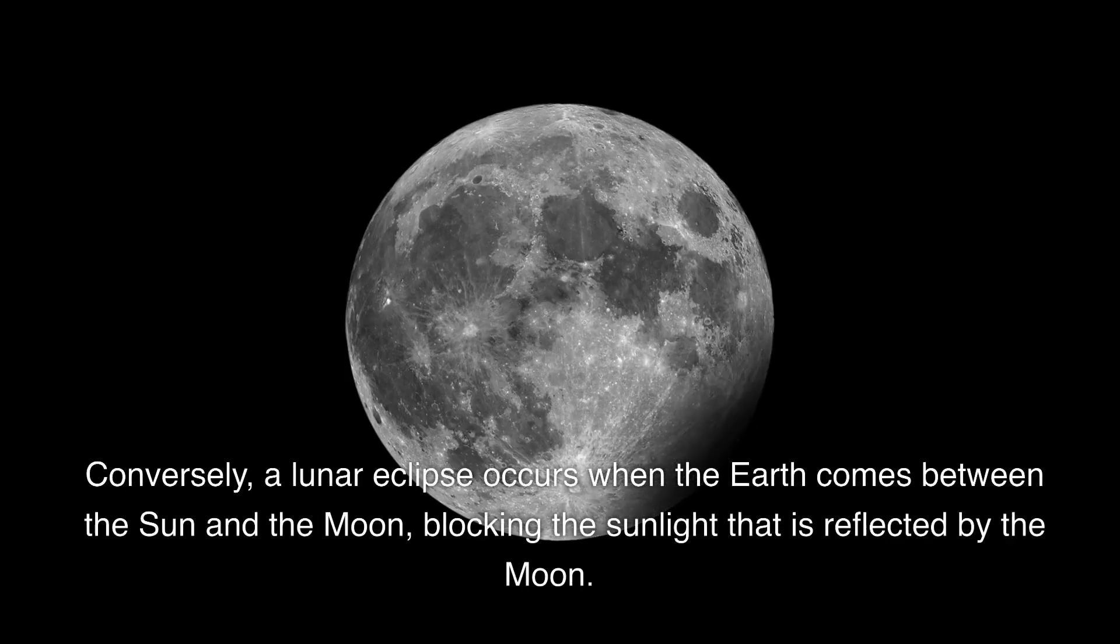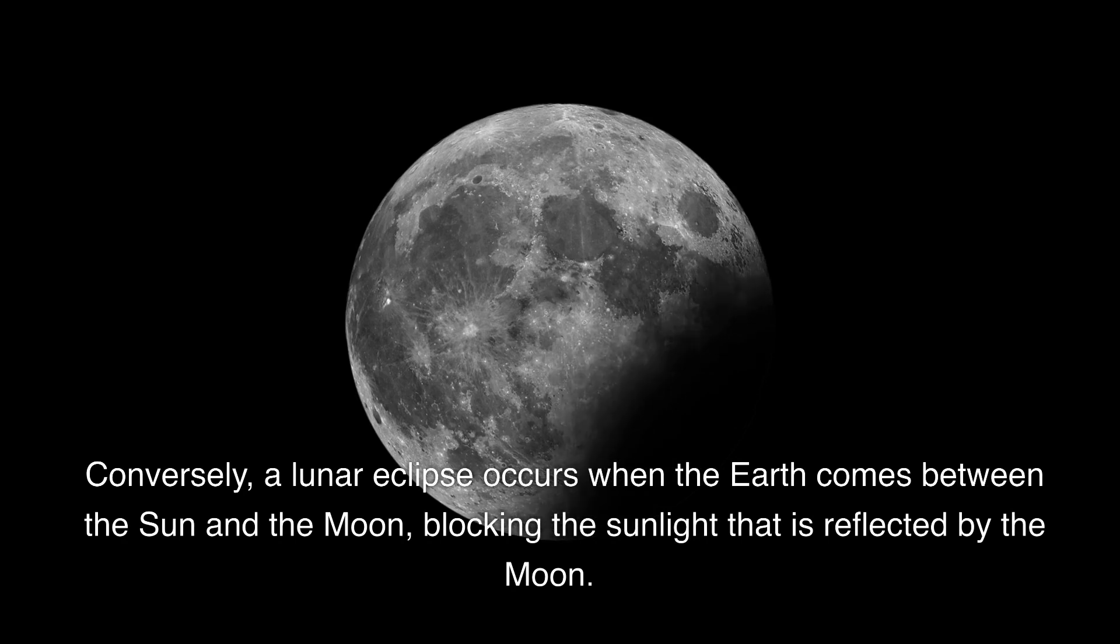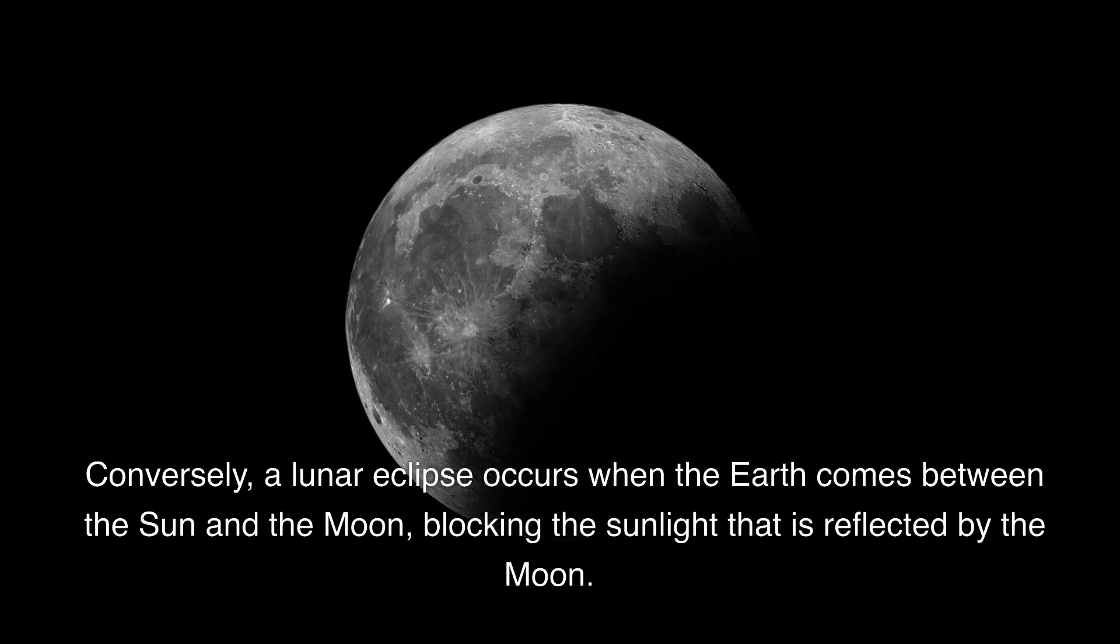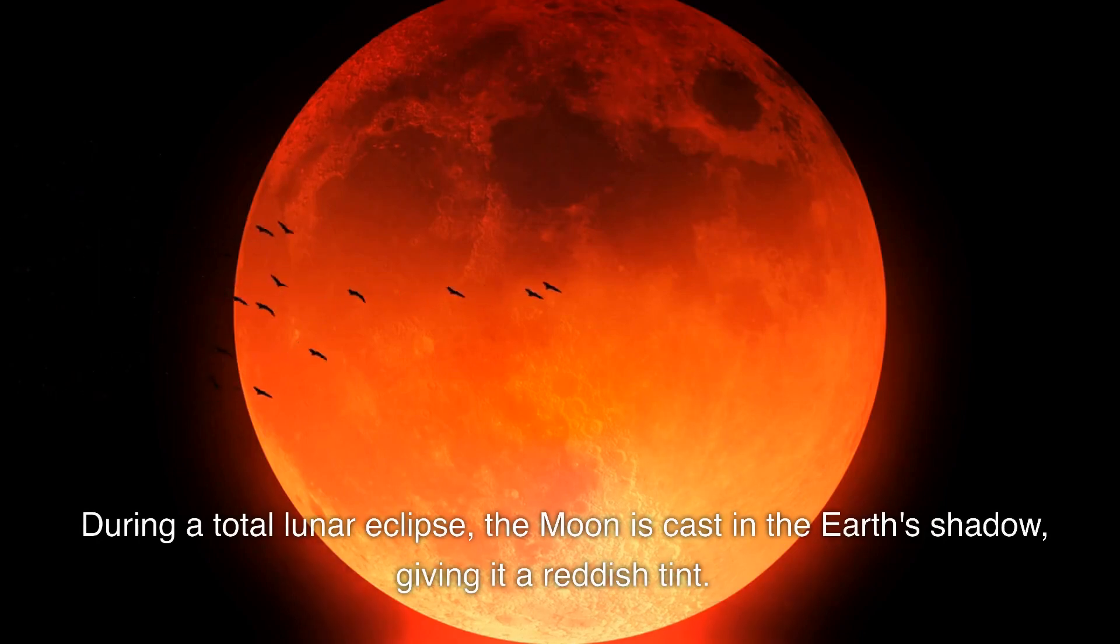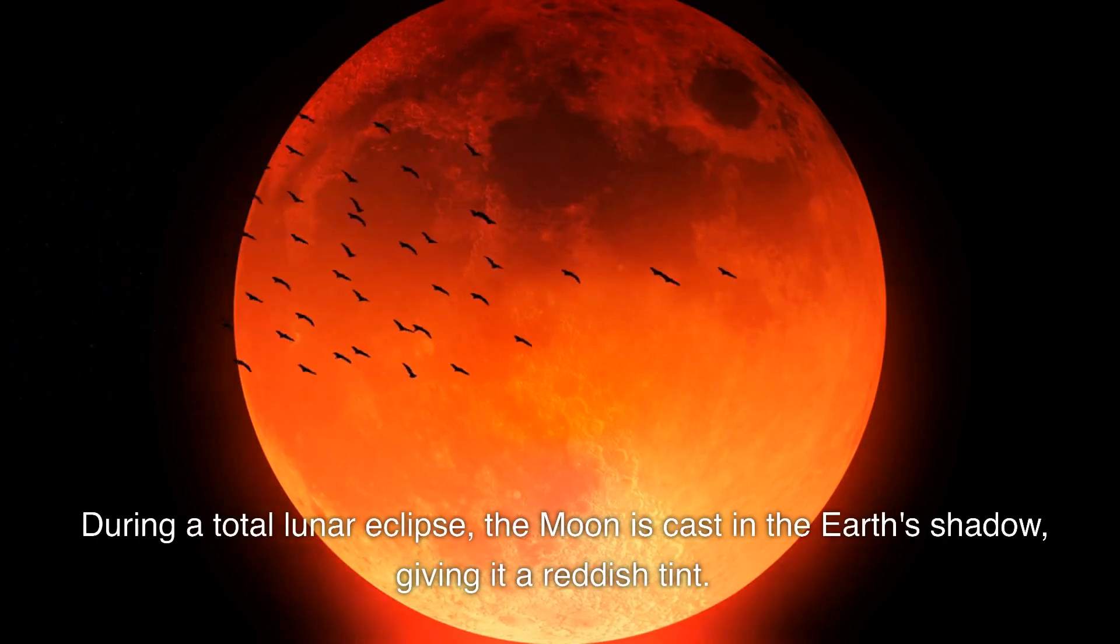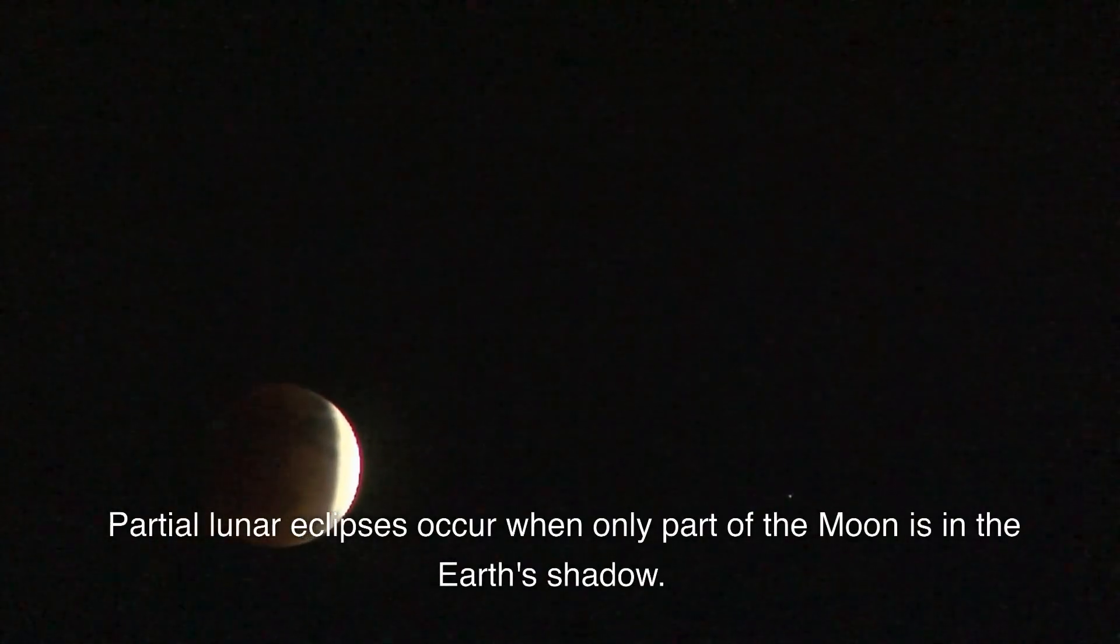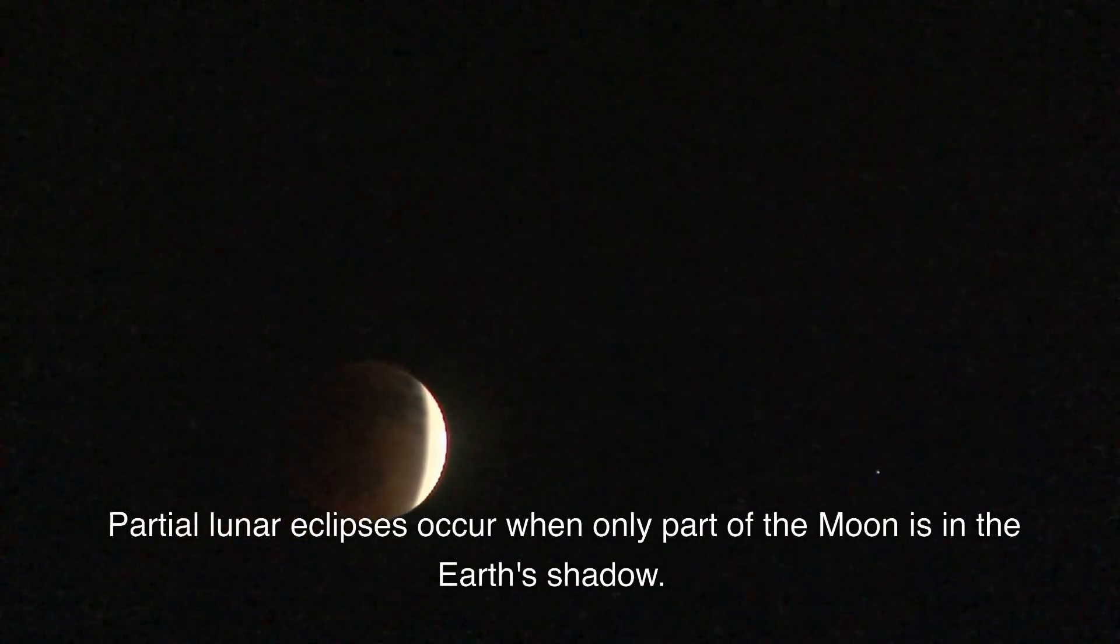Conversely, a lunar eclipse occurs when the earth comes between the sun and the moon, blocking the sunlight that is reflected by the moon. During a total lunar eclipse, the moon is cast in the earth's shadow, giving it a reddish tint. Partial lunar eclipses occur when only part of the moon is in the earth's shadow.